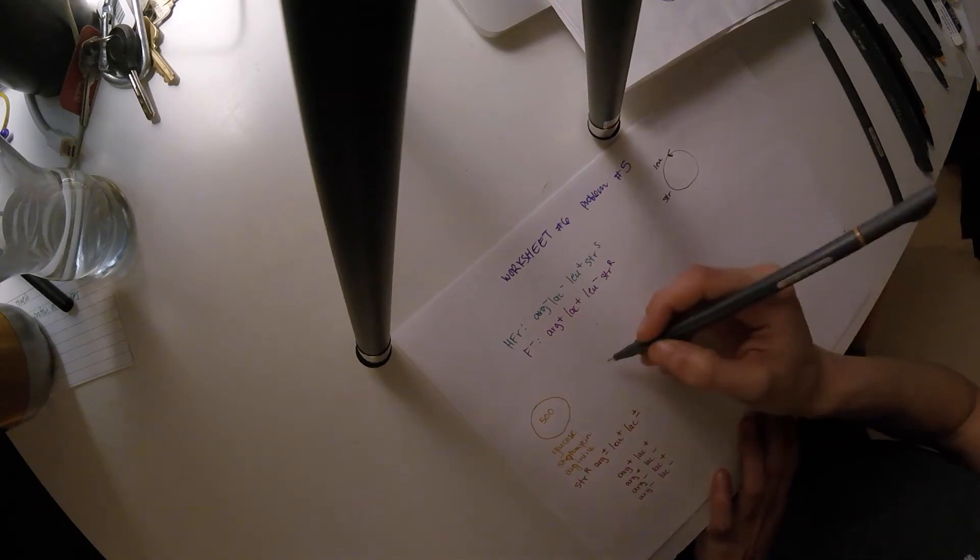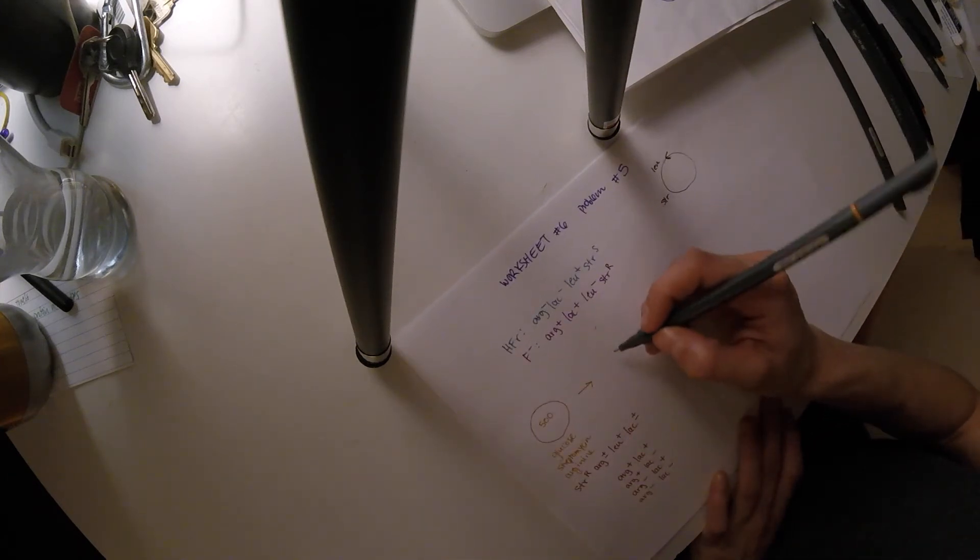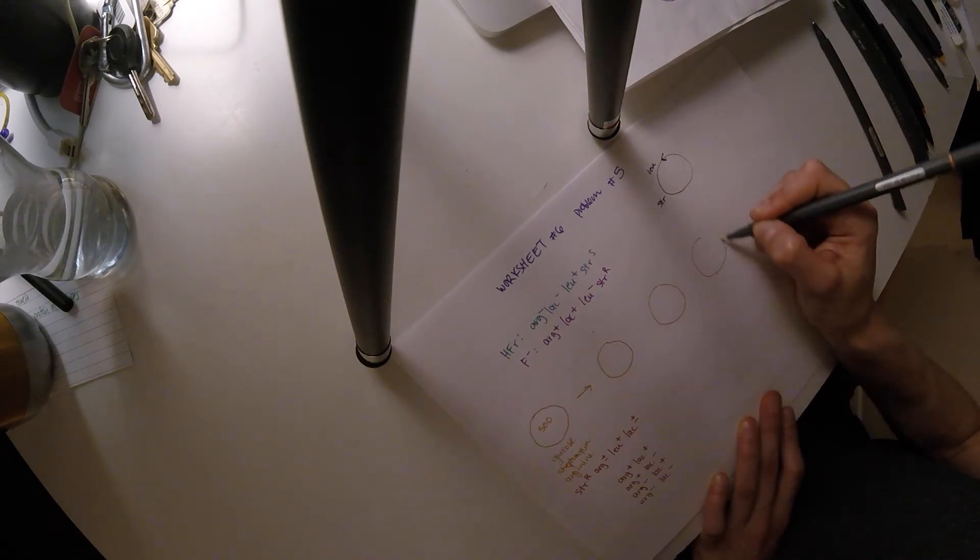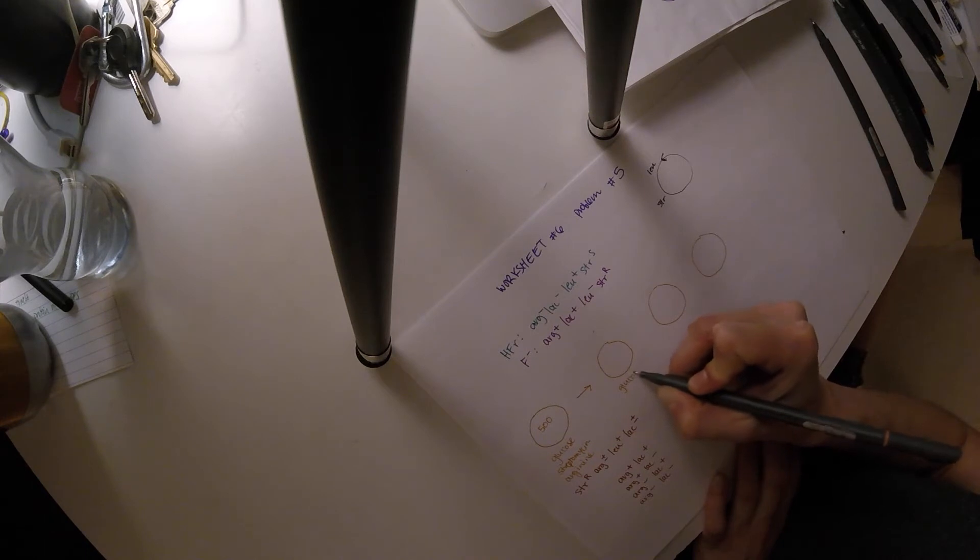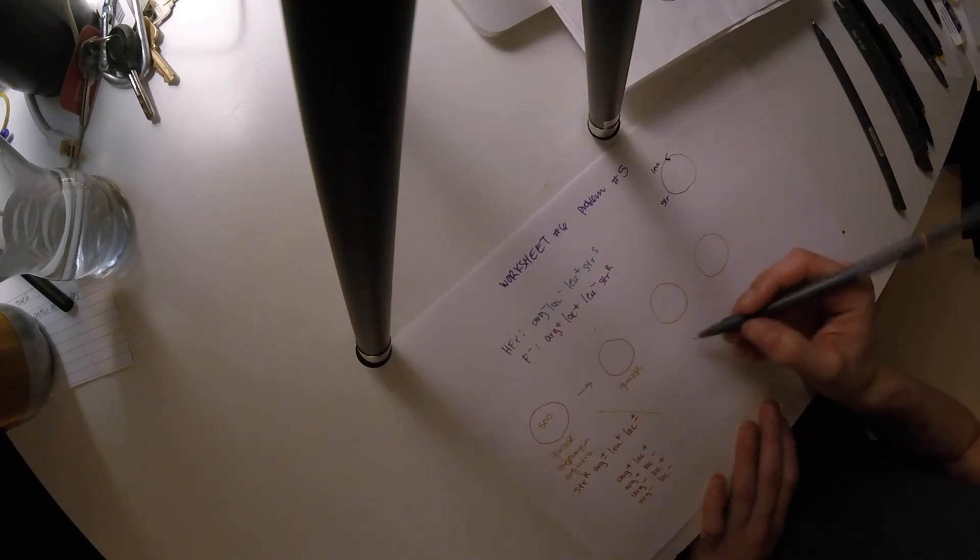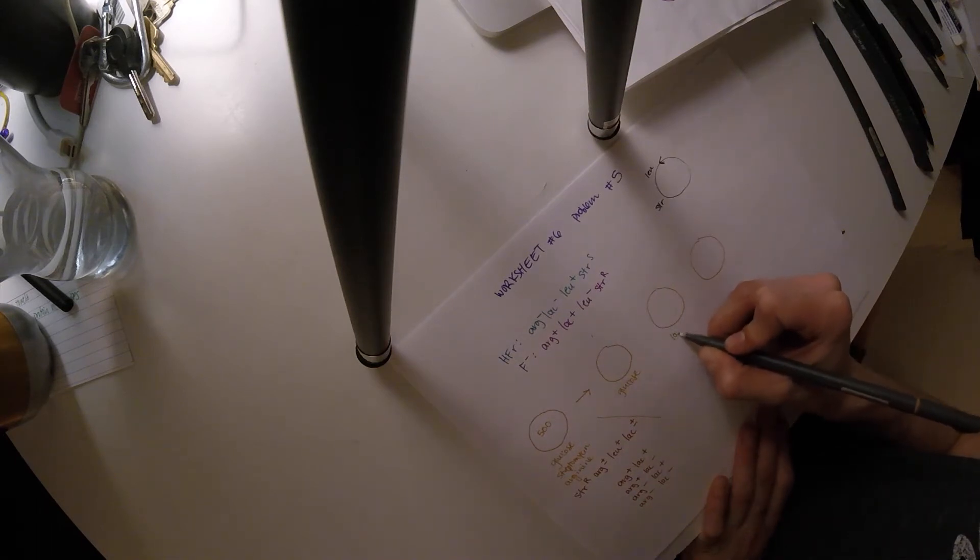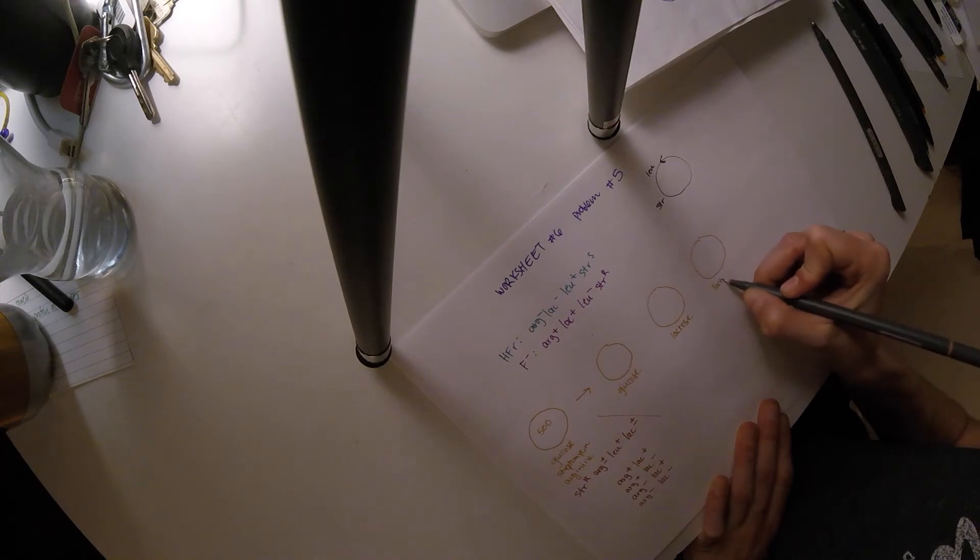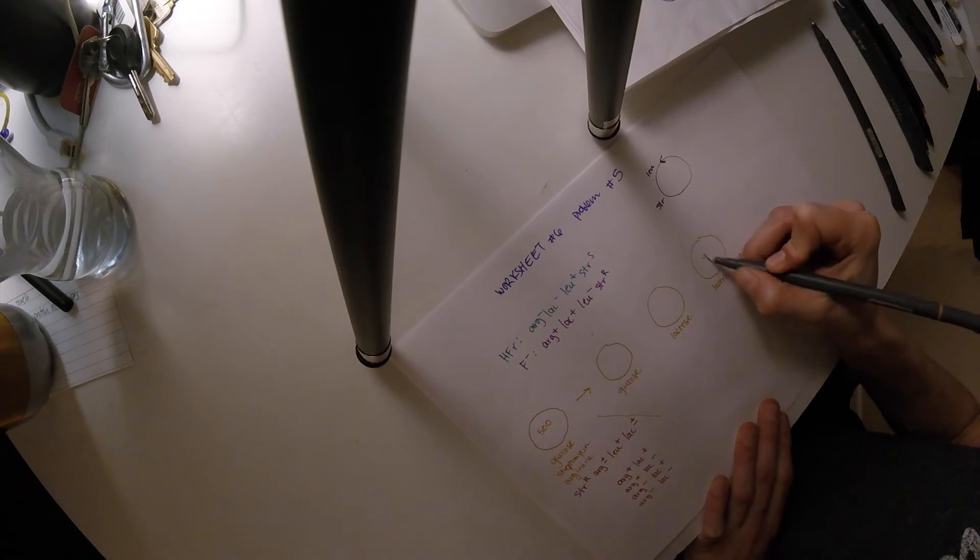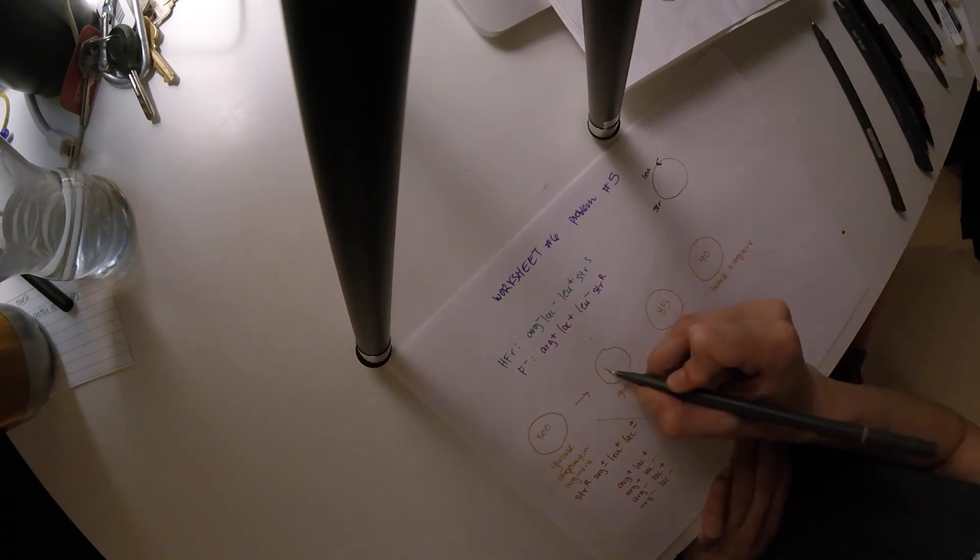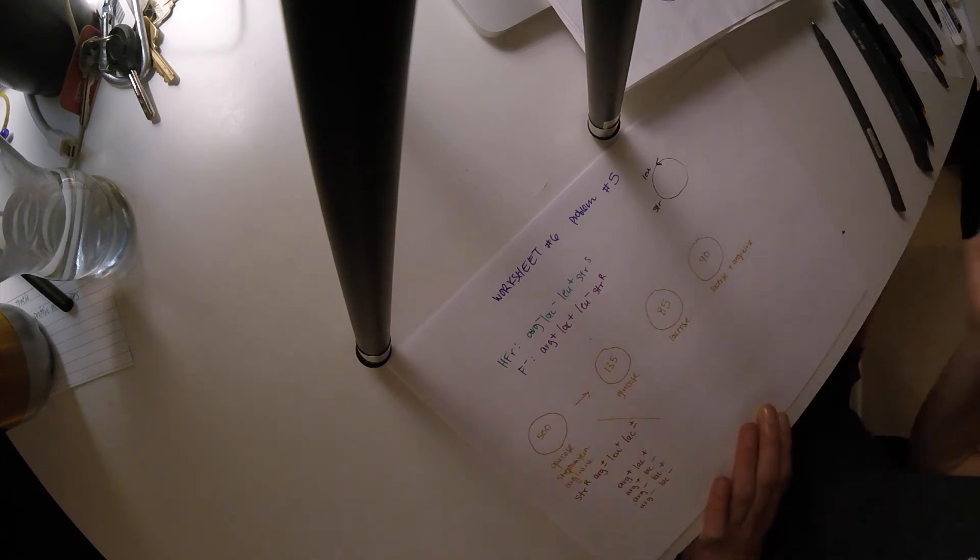So they gave us three other plates. So they did replica plating on three different plates, and this one has just glucose. This one has no glucose and just has lactose. This one has lactose plus arginine. This has 90 colonies, this is 85, and this has 135.